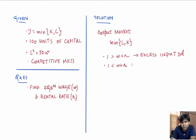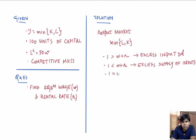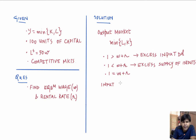If one is less than w plus r, then the per-unit price the firm gets from selling output is one, but it costs them w plus r which is greater than one. In this situation the firm will decide not to produce anything, and hence will not demand any capital or labor. Since the supply of capital is 100 units, this situation would lead to excess supply of capital. So we are going to look at the input market to find the wage and rental rate at which both markets clear simultaneously.